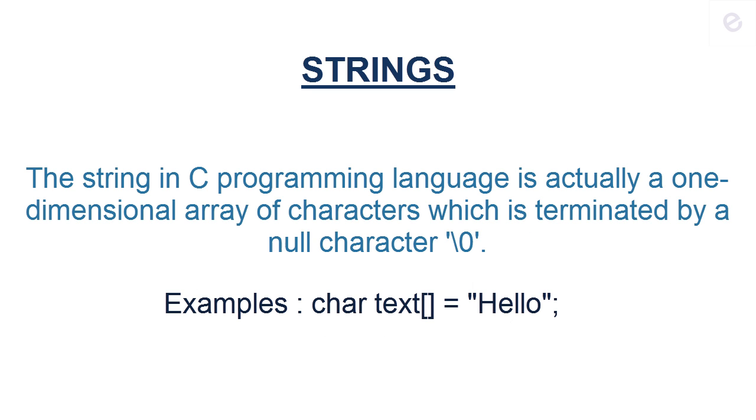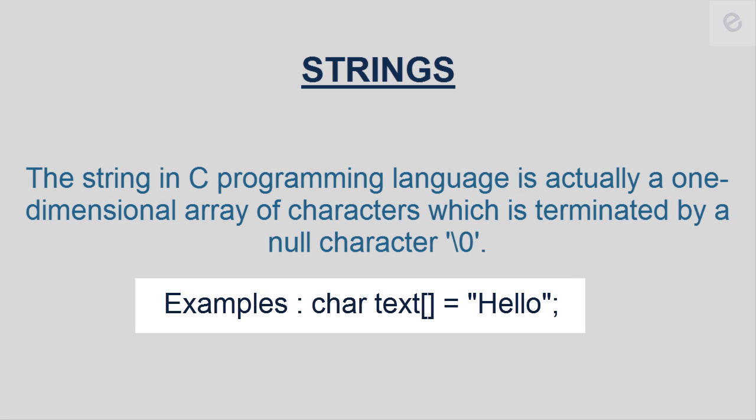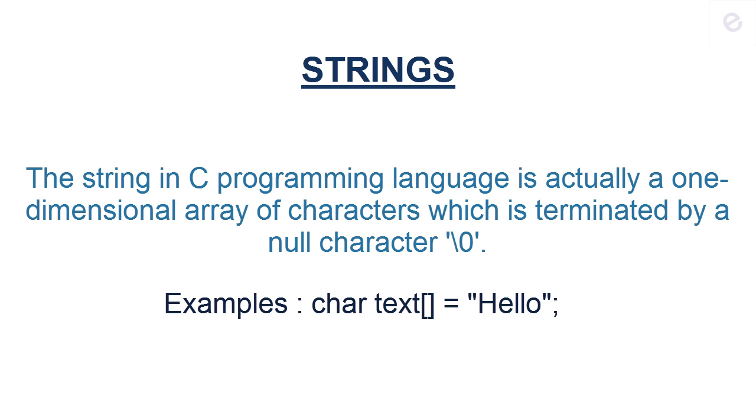Now let's talk about strings. Strings in C programming language is actually a one-dimensional array of characters which is terminated by a null character. Now you would be worrying about arrays - array is a particular chapter in C which we would be dealing in later tutorials. Just you need to understand that each letter in the word 'hello' is a character - like H is a character, E is a character, L is a character - and the group of characters form a string, or like a group of letters form a word.